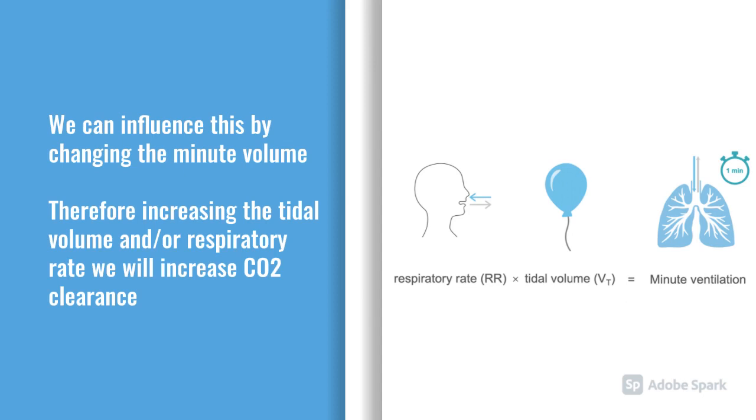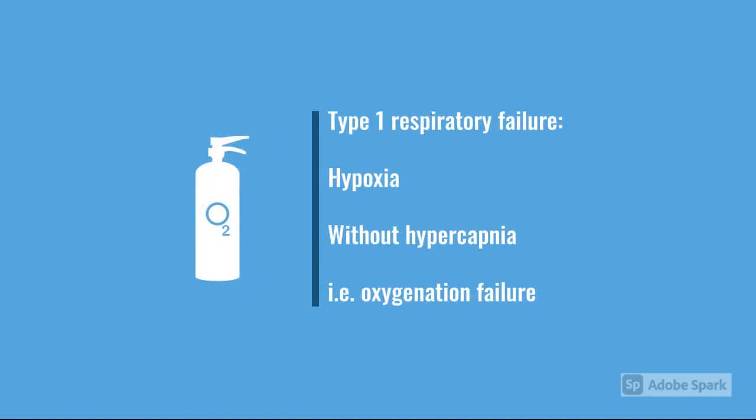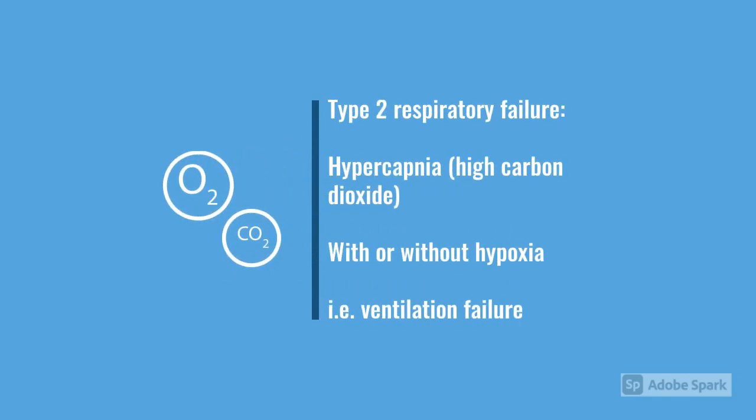There are two key terms we need to know about: type 1 and type 2 respiratory failure. Type 1 respiratory failure occurs when you have hypoxia without hypercapnia — that's an oxygenation failure. Type 2 respiratory failure occurs when you get hypercapnia, often with a bit of hypoxia, but you don't necessarily have to have hypoxia with that. That's essentially a ventilatory failure, or a failure with expiration.